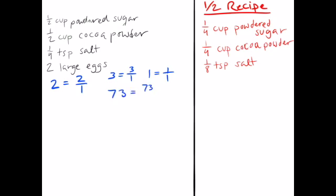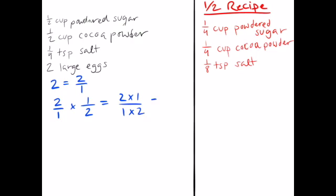In fact, any number divided by one is just the original number. So if we write it as two over one, we can multiply it just like our other fractions. So we're going to look at the numbers on the top. That's two times one, and we're going to write out what that equals. That equals two. And then we're going to multiply the numbers on the bottom. That's one times two. That's also two.